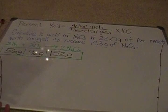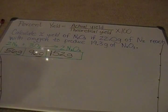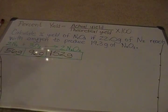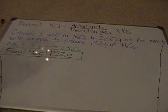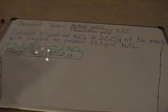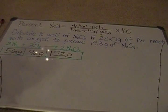That difference between what you actually get and what you expect to get is what you use to calculate percent yield. The formula is: percent yield equals your actual yield — what you actually get from an experiment — divided by the theoretical yield, which is the one we calculate. When you divide those, you get a decimal that you then multiply by 100 to convert to a percent.